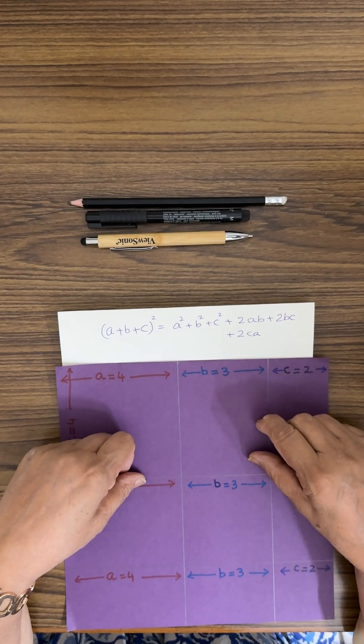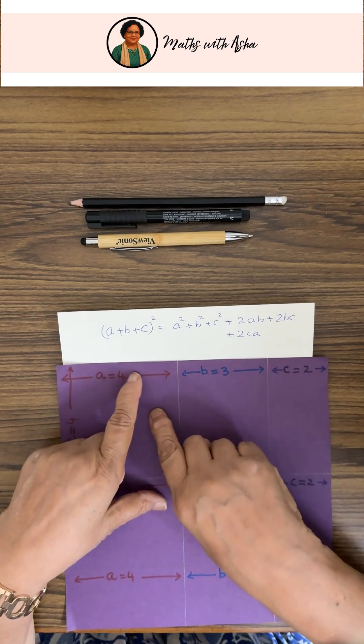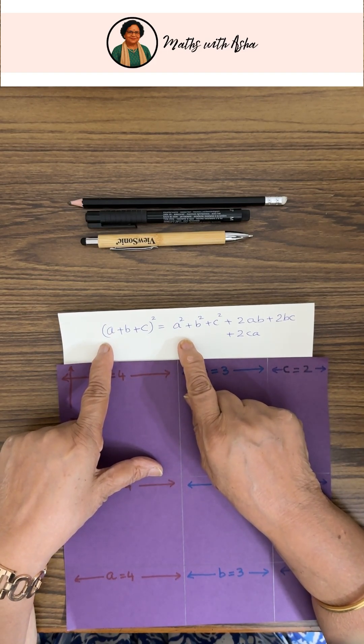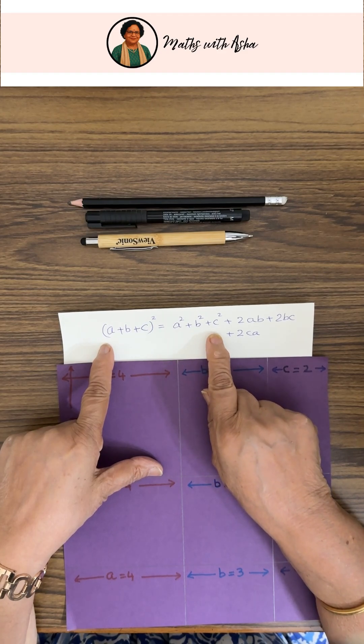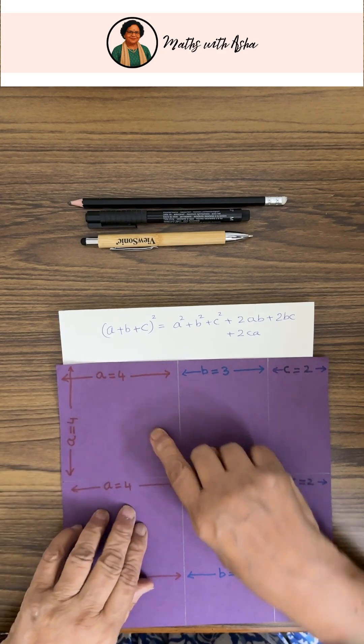We are going to demonstrate an algebraic formula visually and the formula is (a + b + c)² is equal to a² + b² + c² + 2ab + 2bc + 2ca.